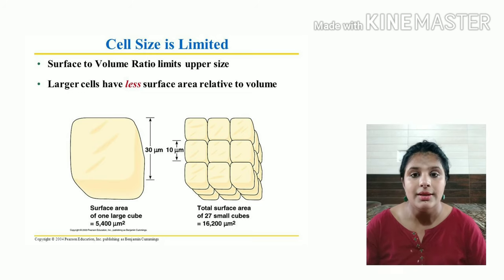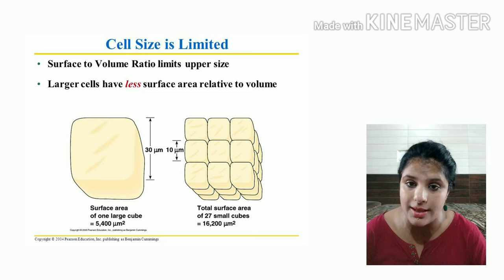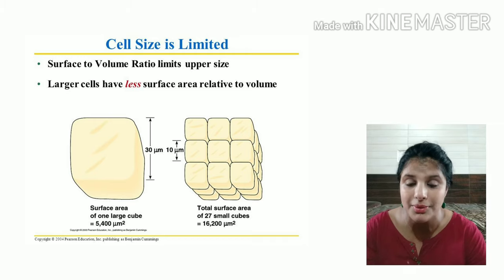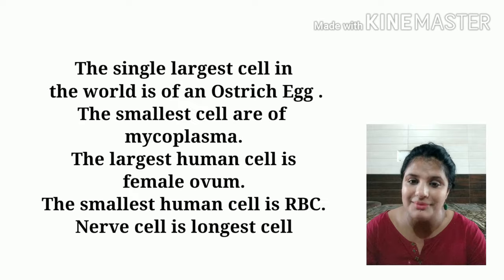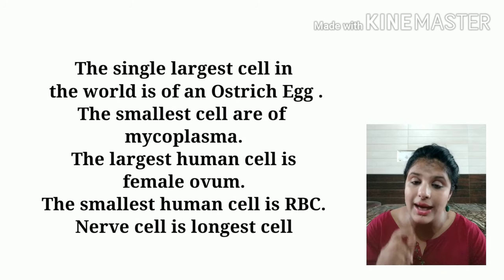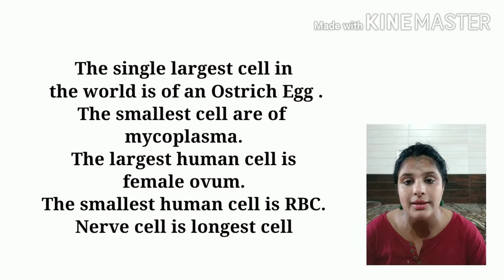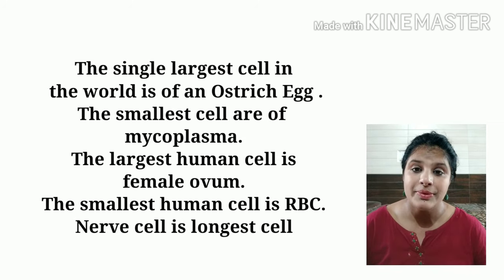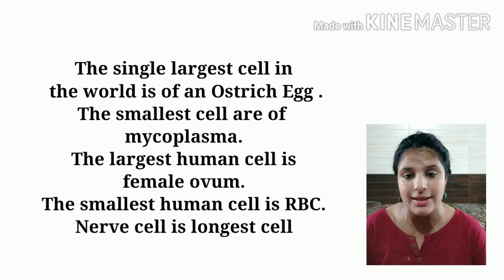Regarding the size of cells — there are cells which are very minute and cells which are very big. Can we see cells with our naked eyes? Yes! Not all cells, but certain ones. For example, the hen's egg which we eat — that egg is also a cell and we can see it. The ostrich egg is the largest egg and therefore the largest cell. The smallest cell is that of mycoplasma.